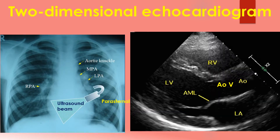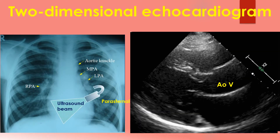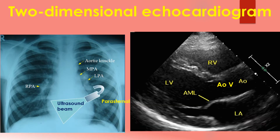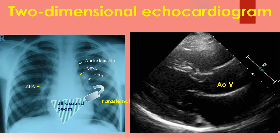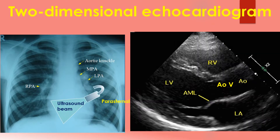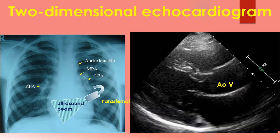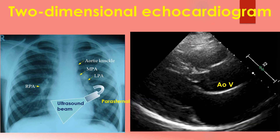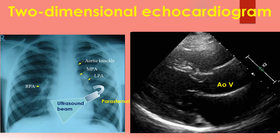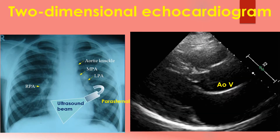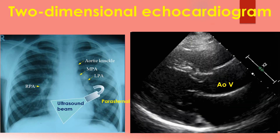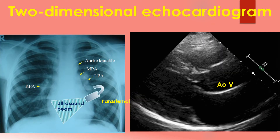During echocardiography, a transducer transmits the ultrasound beam towards the heart. Echoes received by the transducer from various structures of the heart are analysed by the echocardiograph and a graphical representation displayed on the monitor. The location of the transducer is at the top of the image sector. Structures nearer to the transducer are shown at the top of the image and those away from the transducer at the bottom.